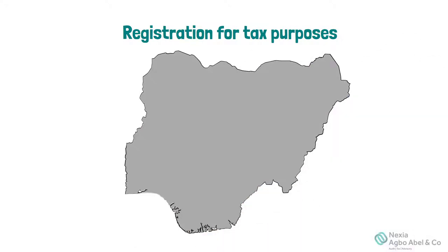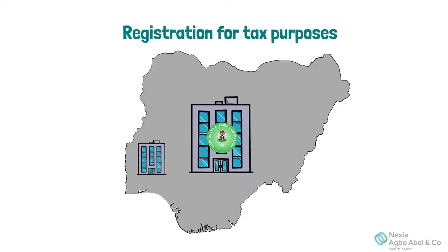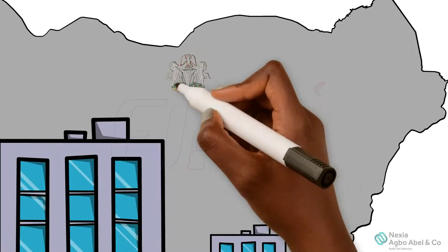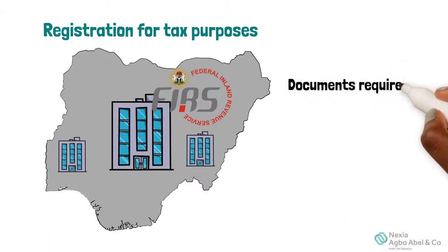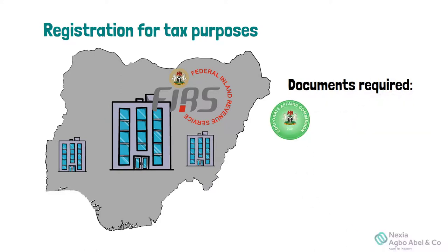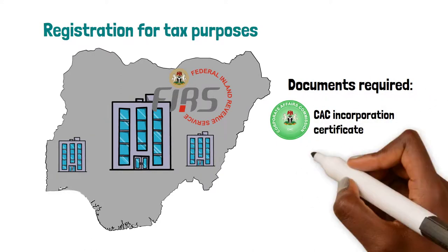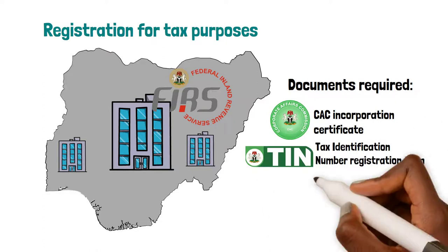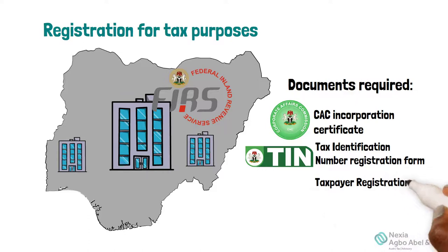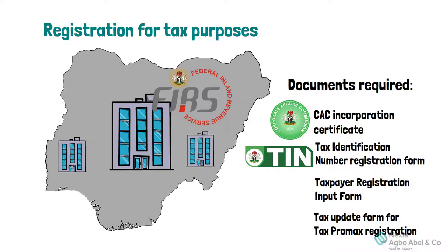For a company to be resident in Nigeria, it must be incorporated in Nigeria or have a significant presence in Nigeria. Once established, the company must register with FIRS for tax purposes. The documents required for registration include the CAC incorporation certificate, a completed Tax Identification Number (TIN) registration form, a taxpayer registration input form, and a tax update form for Tax Pro Max registration.